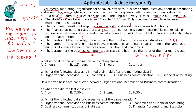The first question: the duration of financial accounting is three hours. Which class is immediately after marketing? Organizational behavior. How many classes are between organizational behavior and business communication? One class — statistics. At what time did the last class end? 8:30 PM. Which pair of classes had the same duration? Economics and financial accounting are both three hours — the same duration.